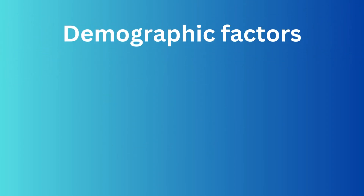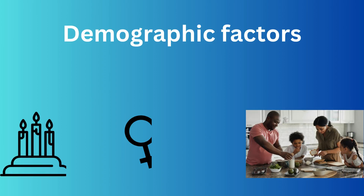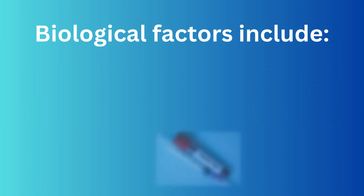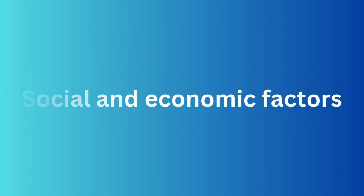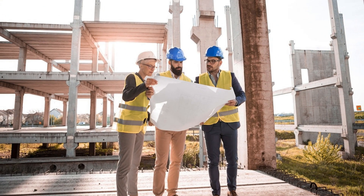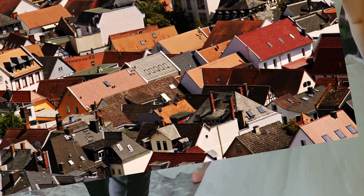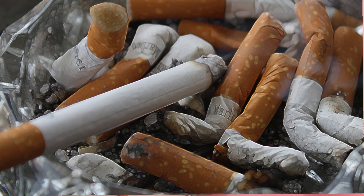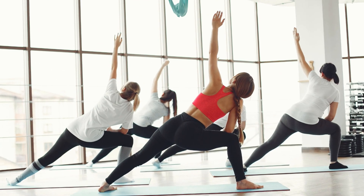Demographic factors include age, sex, and ethnicity. Biological factors include genetic makeup, blood groups, and enzymes. Social and economic factors cover education, occupation, marital status, and housing conditions. Lifestyle factors encompass habits like diet, smoking, and physical activity.